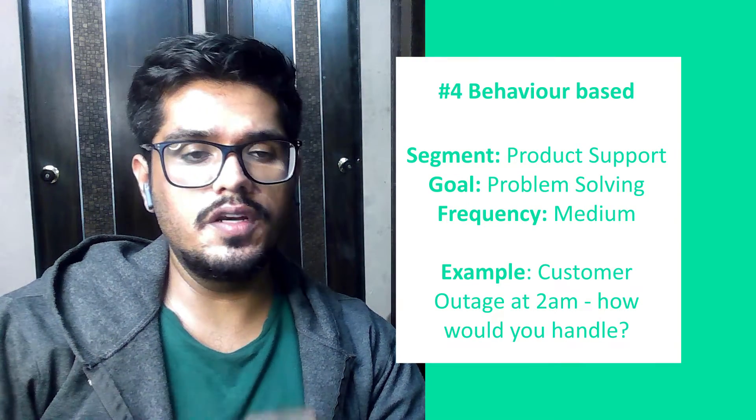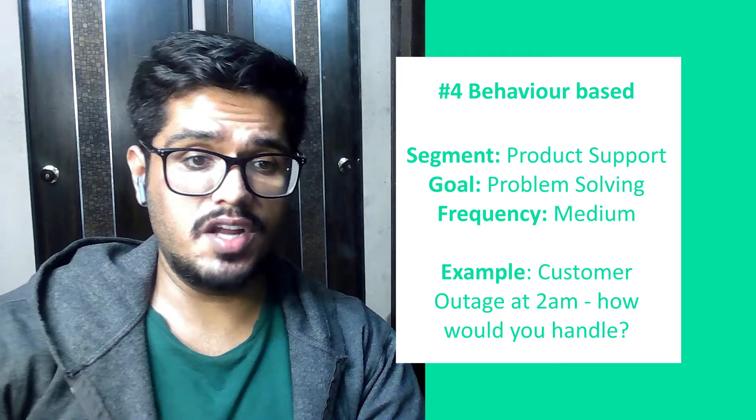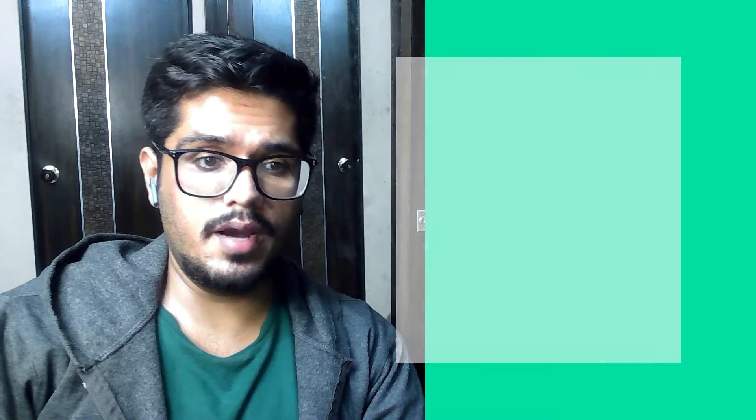Question four is behavioral or situation-based. Because APIs have very high usage, outages are common. The interviewer might ask: a customer calls you at 2am about a major outage — how would you approach that? The goal is structure. Typically, the first thing you do is isolate the problem — look at data dashboards, look at error codes. 2xx codes mean everything is fine, but 500s and 400s indicate a problem. Check if other customers face a similar issue; if yes, it's an internal problem requiring team collaboration.